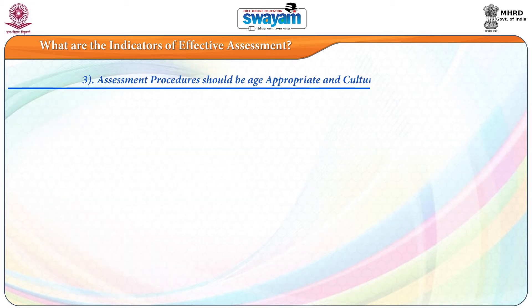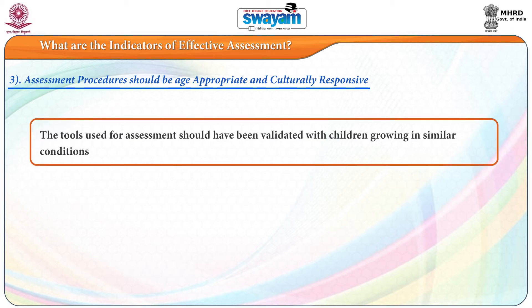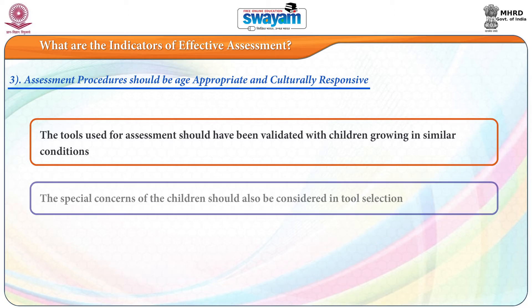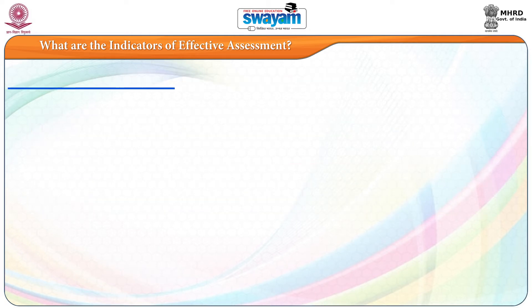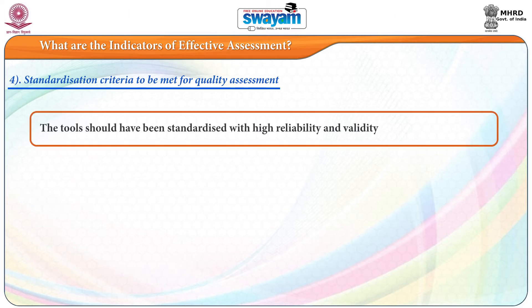The third indicator is that assessment procedures should be age-appropriate and culturally responsive. The tools used for assessment should have been validated with children growing in similar conditions, and the special concerns of the children should also be considered in tool selection. The fourth indicator is that standardization criteria must be met for quality assessment, including high reliability and validity of the tool.